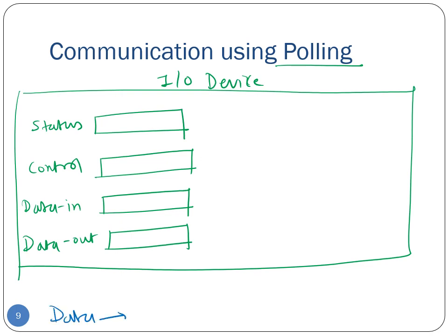For this example, assume the CPU wants to write 100 numbers — 100, 99, 98, down to 1 — inside this I/O device. The CPU will start with the first number, 100. When I say the CPU wants to write data inside the I/O device, it is essentially going to use the device driver to do this task — think of the device driver as a piece of code in the kernel used to communicate with the I/O device.